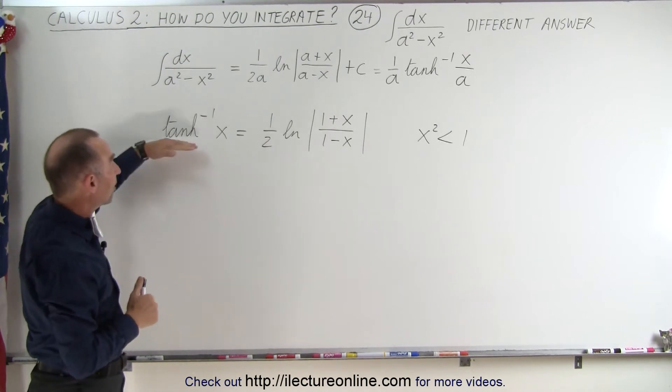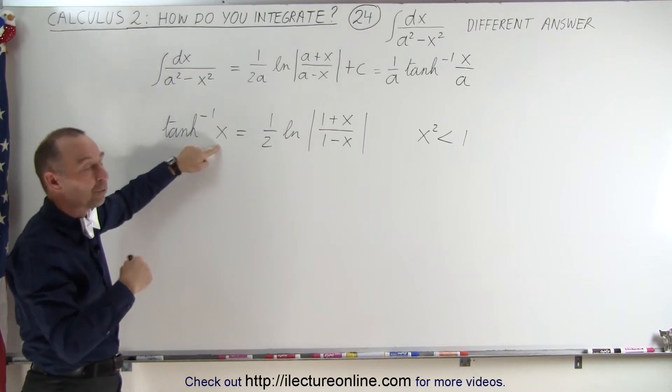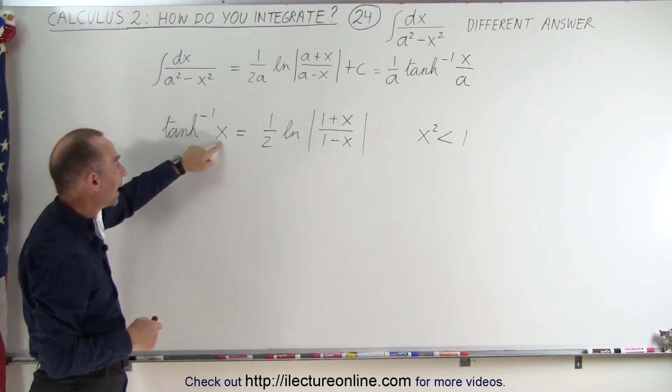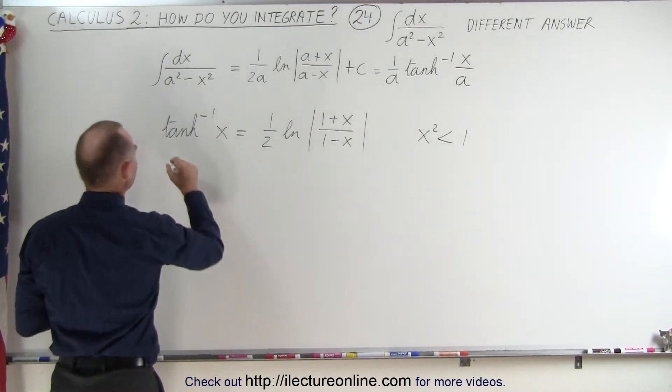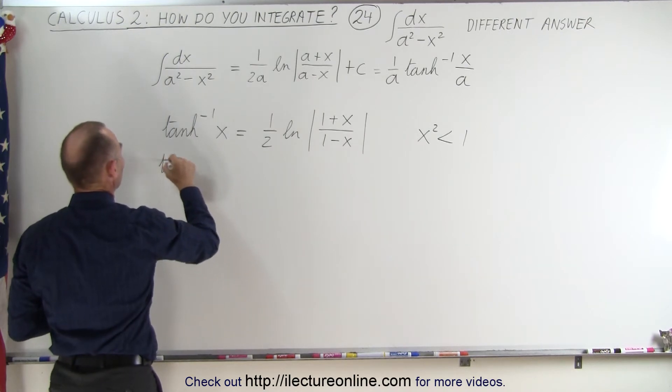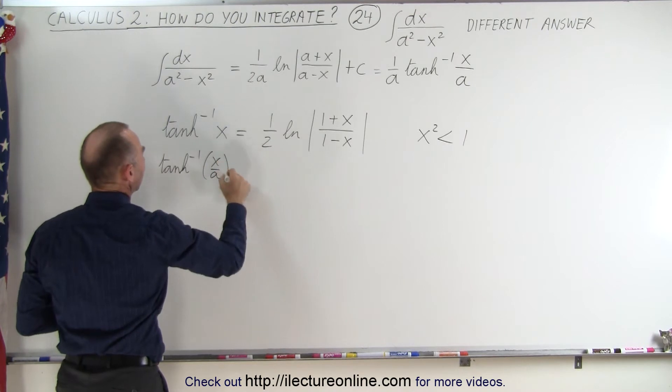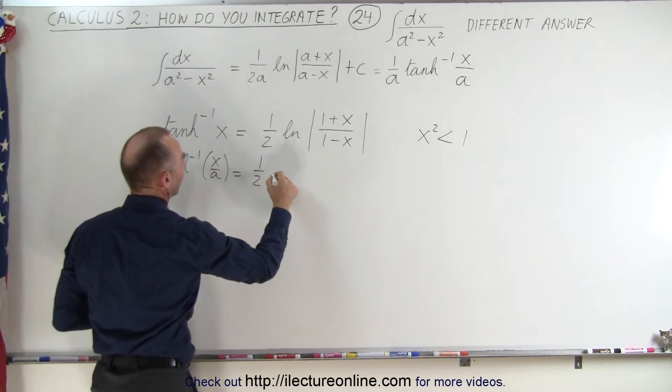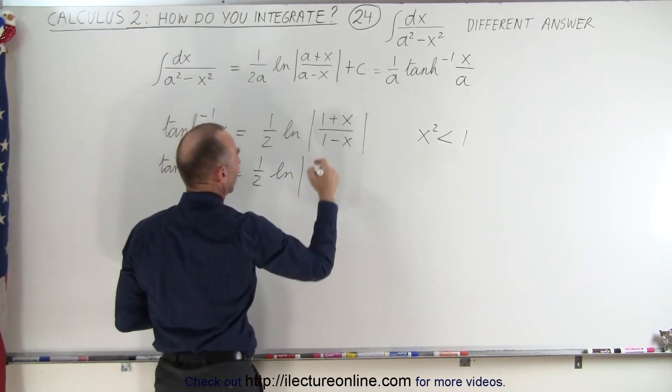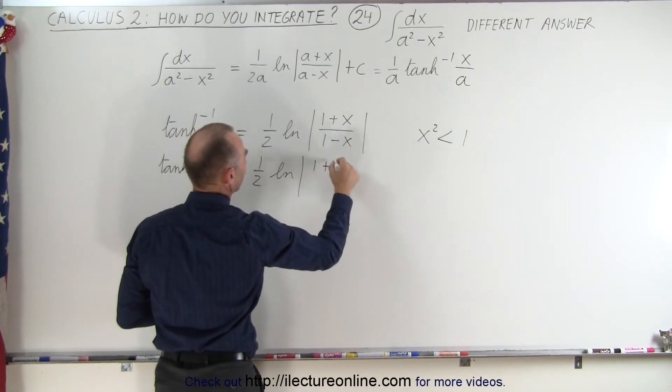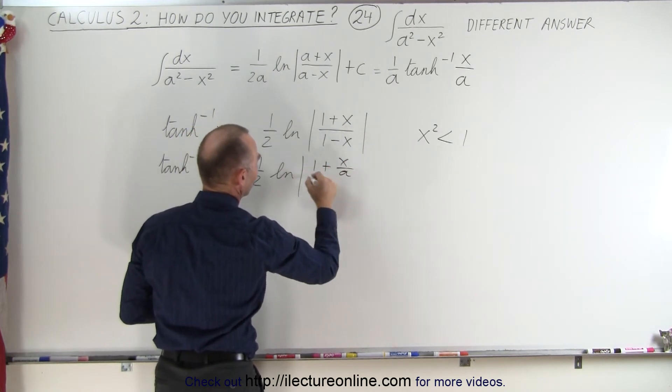So if this is the definition of the inverse hyperbolic tangent of x, what would it be for x over a? Let's replace every x by x over a and see what we get. So the inverse hyperbolic tangent of x over a is equal to one-half times the natural log of, and here we're going to replace every x by x divided by a.